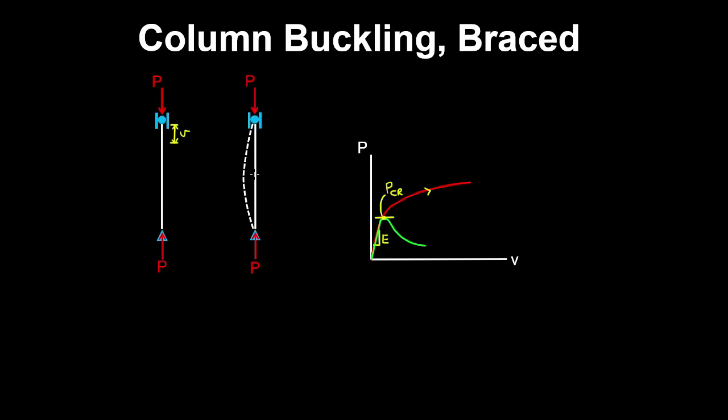After the critical load is reached, the column deflects laterally. Prior to the critical buckling load being reached, the column was in stable equilibrium.